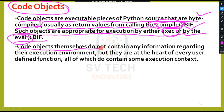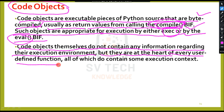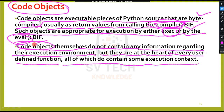Code objects themselves do not contain any information regarding their execution environment, but they are at the heart of every user-defined function, all of which do contain some execution context. The program execution environment won't be part of code objects — only user-defined functions involve that.